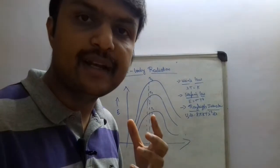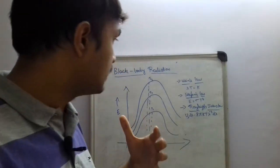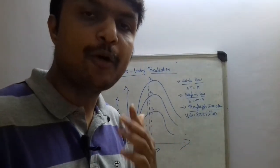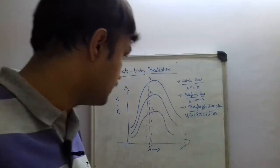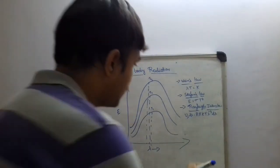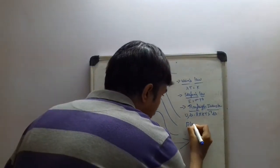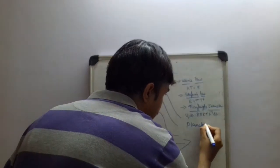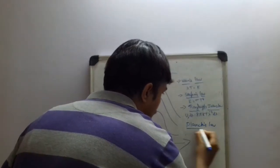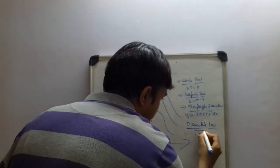which was called as ultraviolet catastrophe. So we needed a proper explanation, and the hidden variable came from the man himself called Planck, and it was called as Planck's law. And the hidden variable was h, which is Planck's constant.